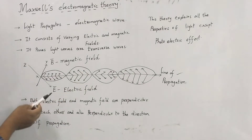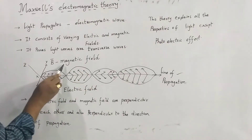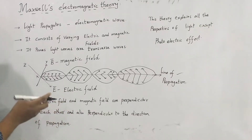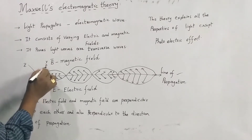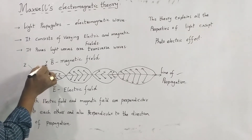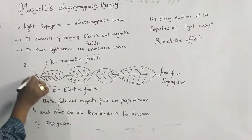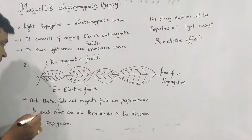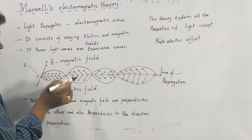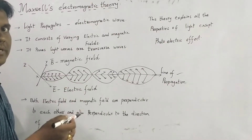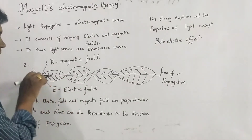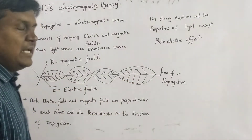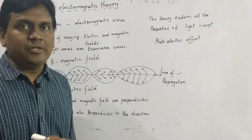Throughout the transfer of the wave from one place to another, the magnetic field and electric field are perpendicular to each other. The angle between the magnetic field and the electric field is 90 degrees. Both the magnetic field and the electric field are also perpendicular to the direction of propagation, making a 90-degree angle with the propagation of the light wave.